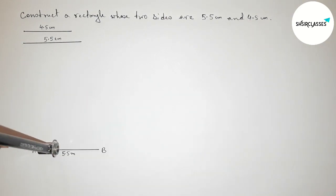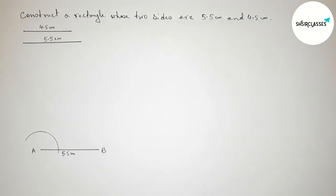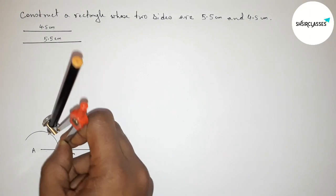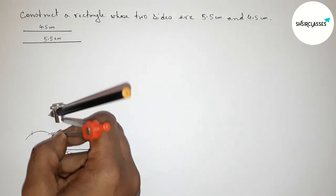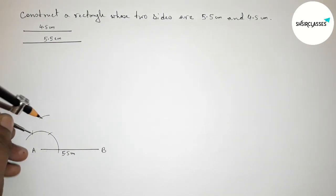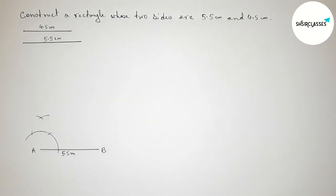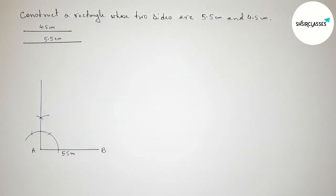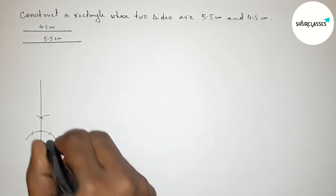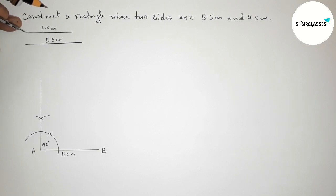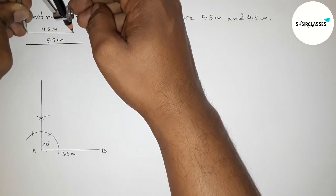Next, construct a 90 degree angle on point A. Putting the compass on point A, taking any length and drawing an arc. Putting the compass at the arc and taking the same length, cutting here, then cutting again. Drawing an arc and joining the line to get a 90 degree angle. We got a 90 degree angle.